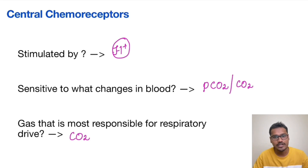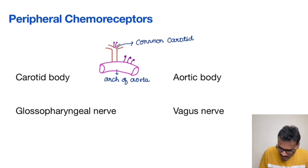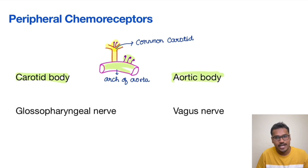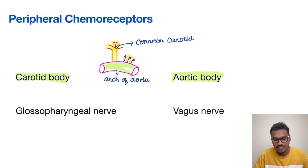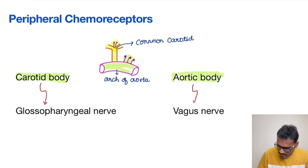Coming to the peripheral chemoreceptors — here we have the carotid body and the aortic body. The aortic body is over the arch of aorta and the carotid body is over the bifurcation of the common carotid. When they get stimulated, the signal is carried to the central nervous system through respective nerves: the carotid body goes via the glossopharyngeal nerve and the aortic body goes via the vagus nerve.